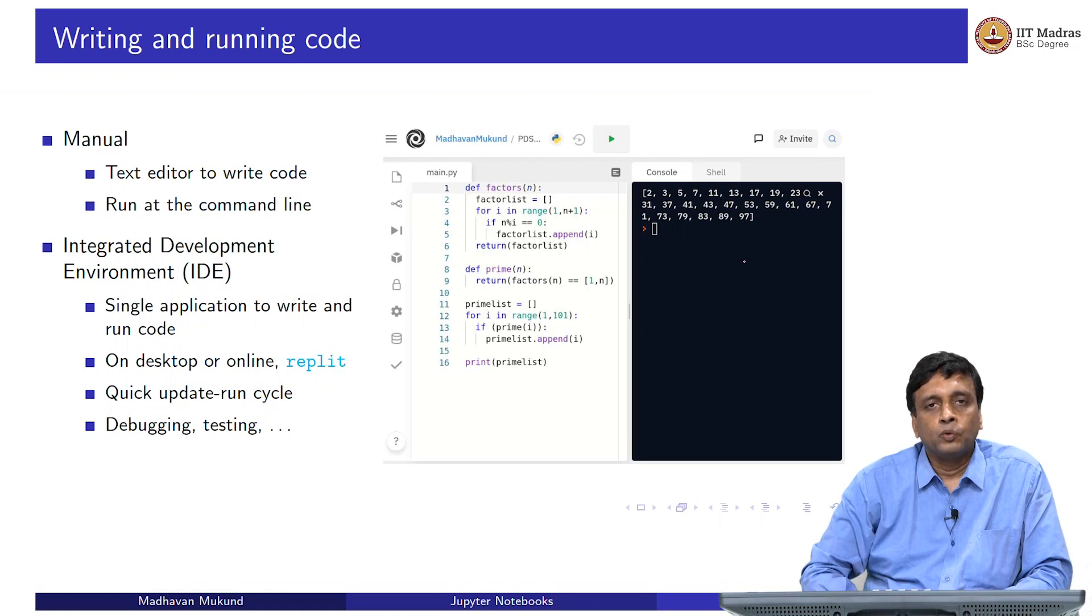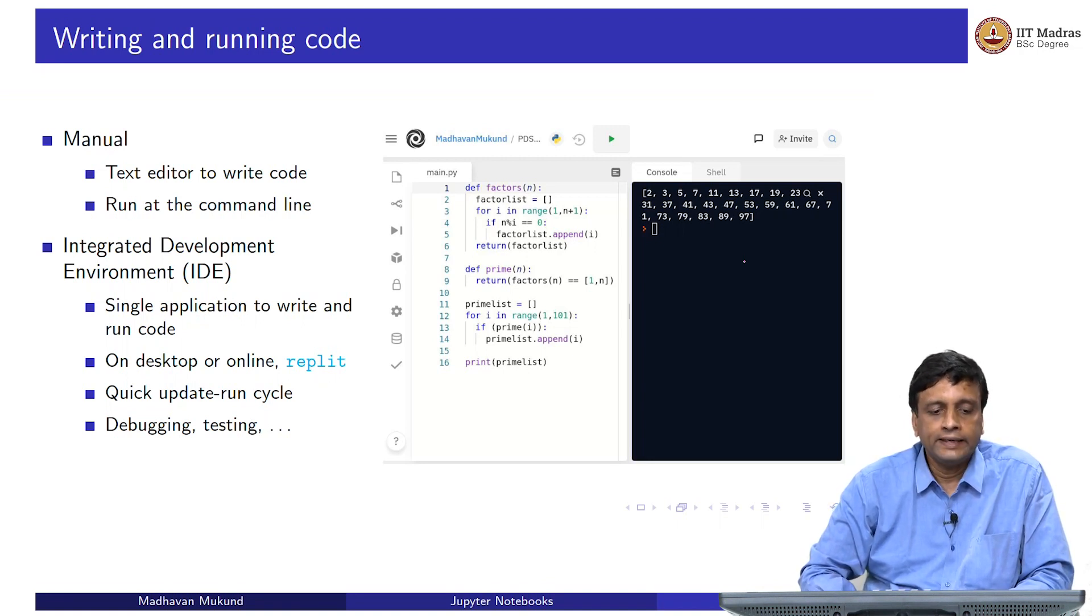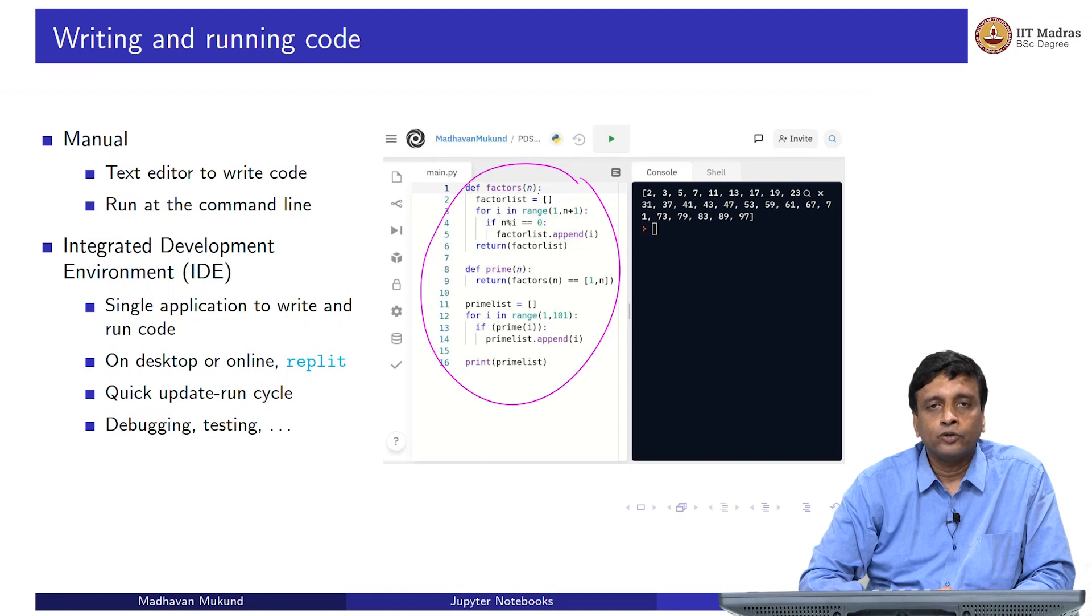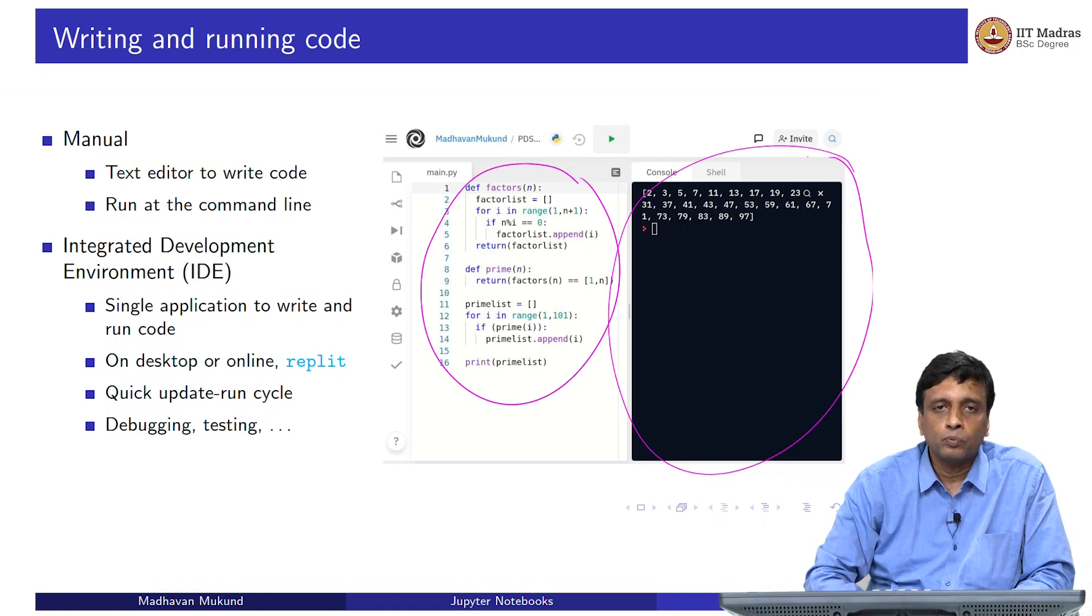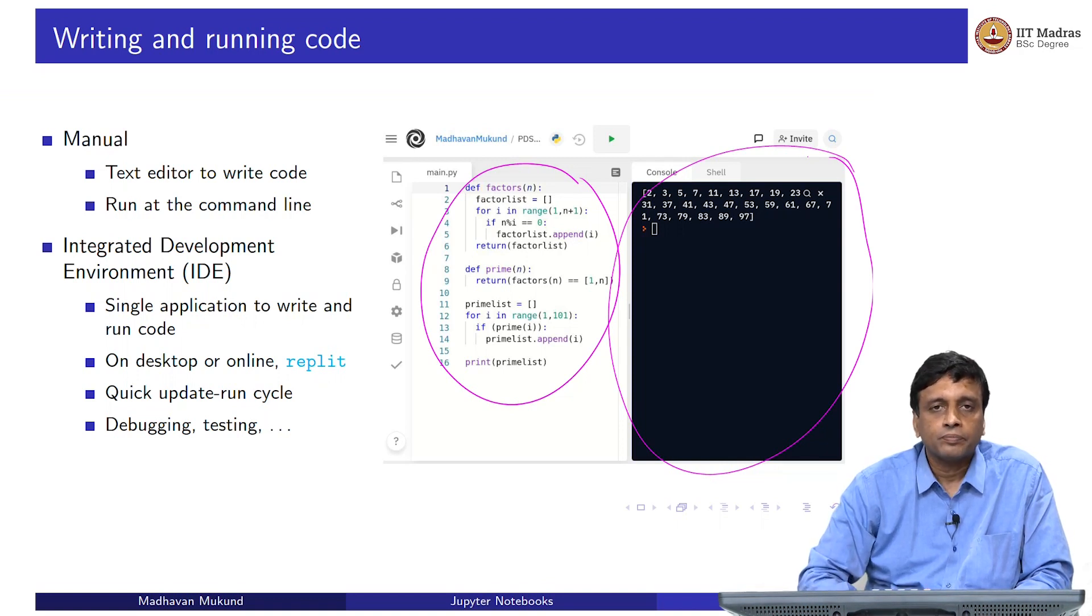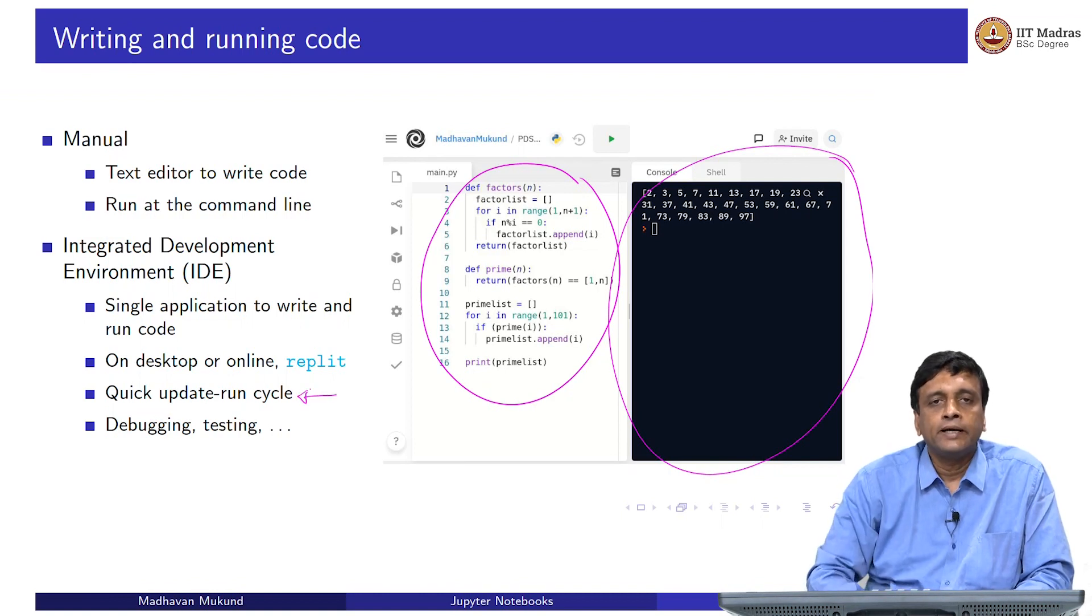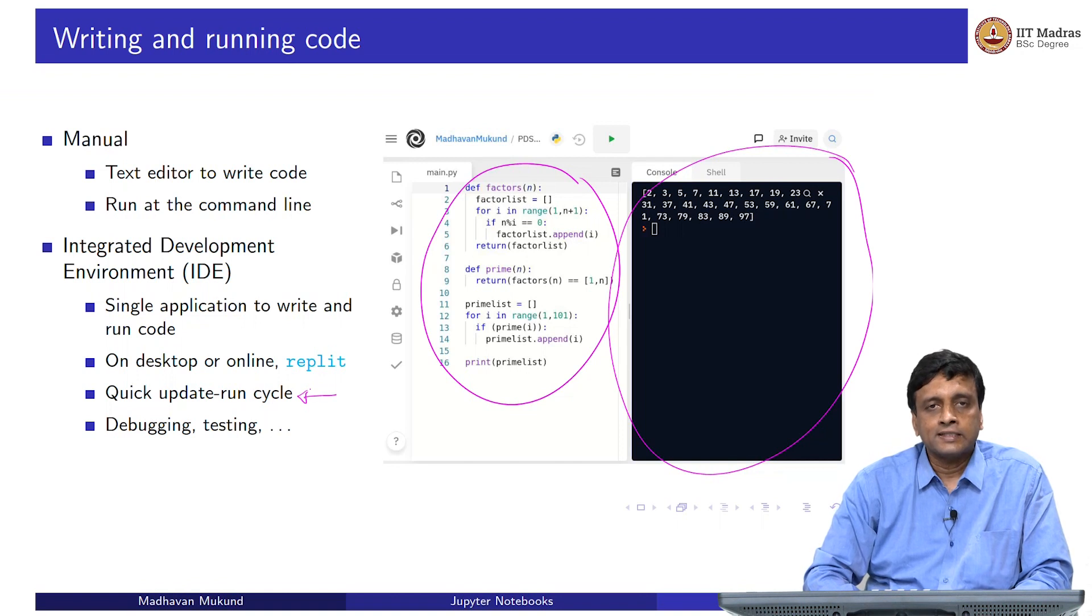This gives rise to a more convenient interface, which you are familiar with, with Replit called an integrated development environment or IDE. In an IDE, you have on one side something where you can edit your code. And side by side, you have this command window where you can run the code and see the output. Because you can now see the output and edit your code in the same interface, it is much easier to cycle back and forth and see how your code can be changed and how the output changes. You have this quick cycle of updating your code and running it. And of course, an IDE has other features also.